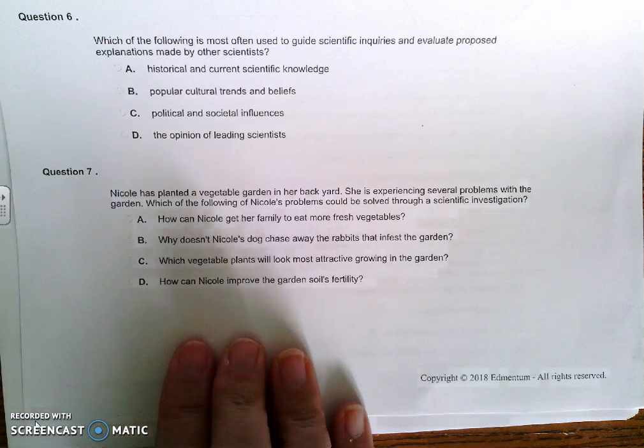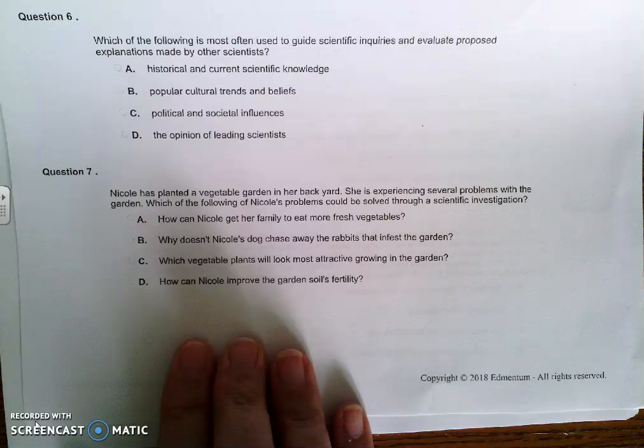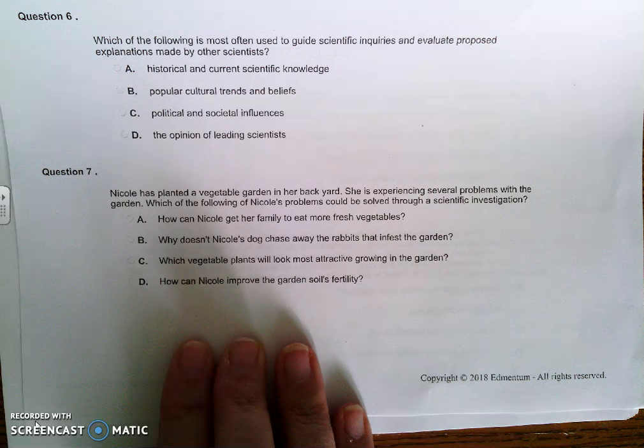Nicole has planted a vegetable garden in her backyard. She is experiencing several problems with the garden. Which of the following of Nicole's problems could be solved through a scientific investigation? And the answer to this is D, how can Nicole improve the garden soil's fertility? Only certain kinds of problems can be solved through scientific investigation. In order to solve a problem through a scientific investigation, a person must be able to form a testable hypothesis about the problem.